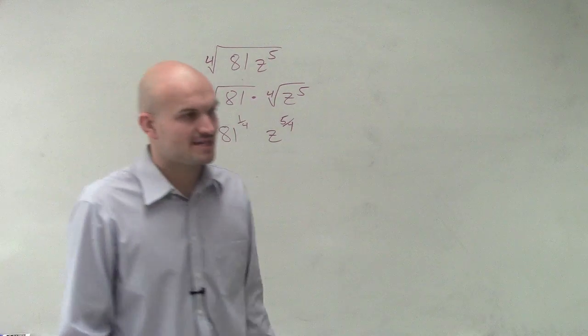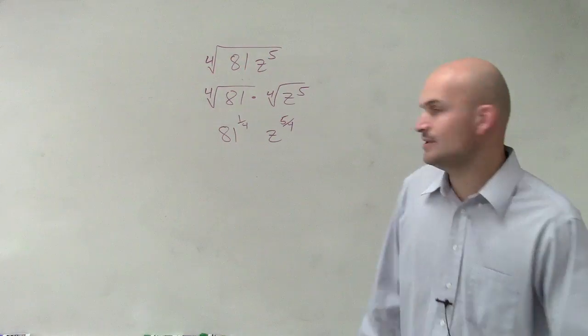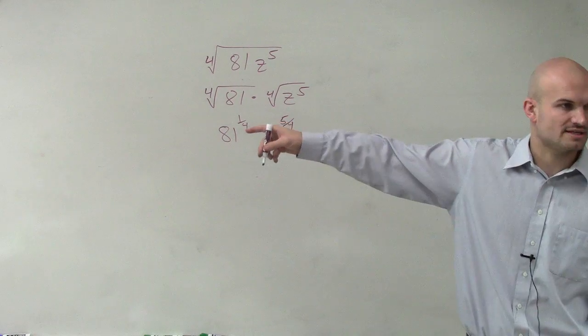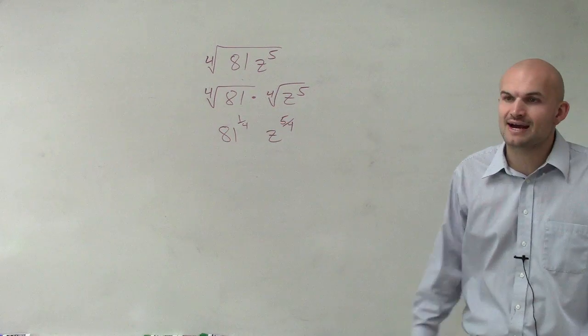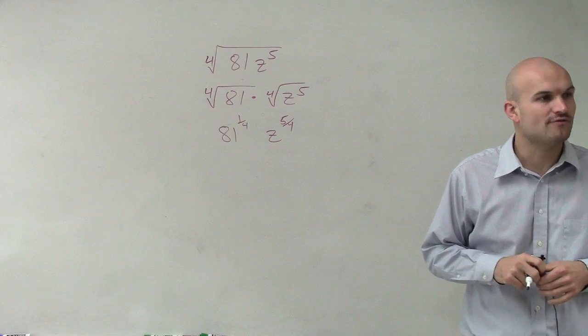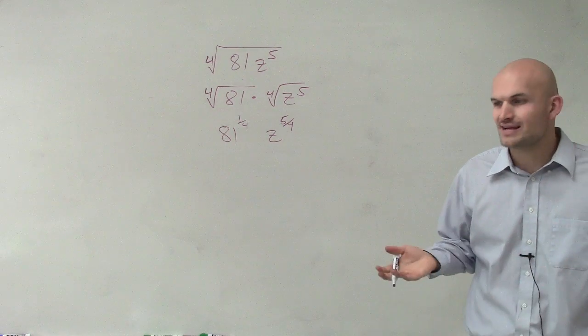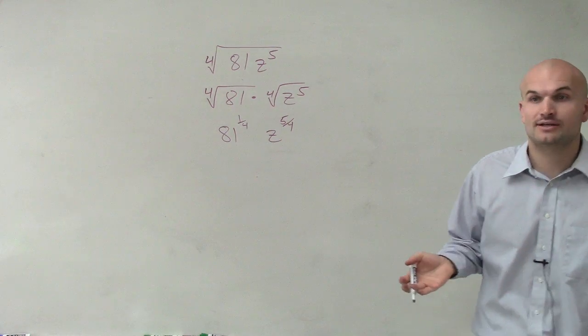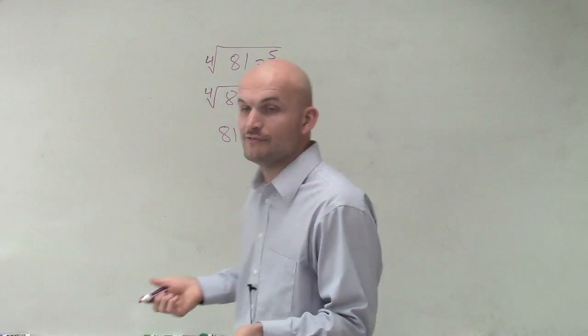But it says to simplify as much as possible. So what we want to do is we can't simplify z to the 5 fourths anymore. Well, let's see if we can simplify 81 to the 1 fourth power. Now, yes, you could probably plug in your calculator if you have one and go and see what exactly that answer is. If you don't have a calculator,